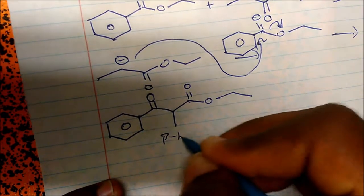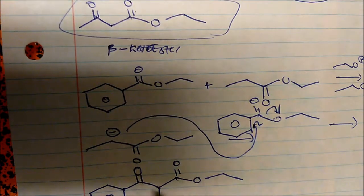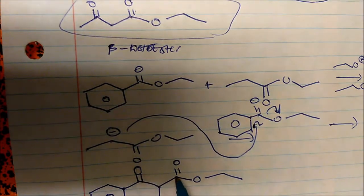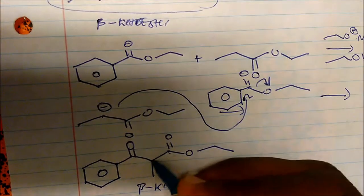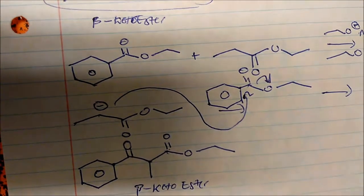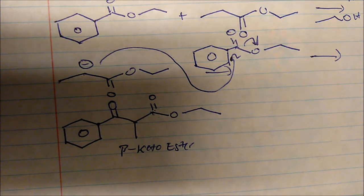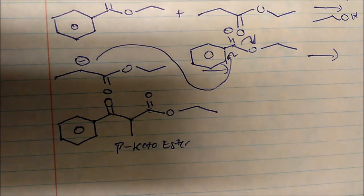And this is a beta-keto ester. Anytime you see the ketones being two carbons away from each other, we know it's a Claisen condensation. Cross-Claisen condensation only differs in that we're using two esters, with one having no alpha carbons.